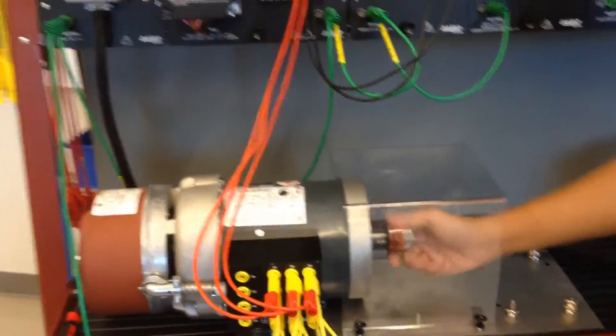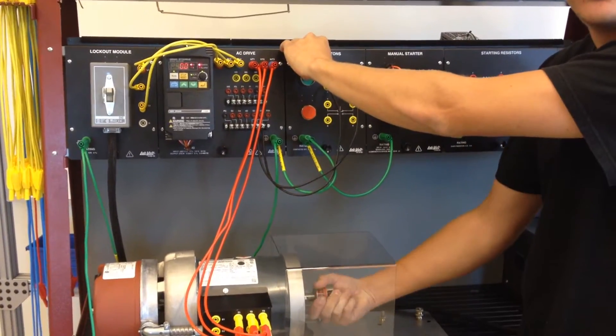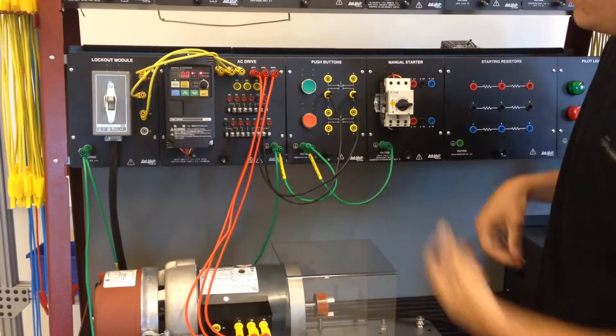So what happens is, right now the motor free spins. When you push the button, it provides DC power to the motor. It gets extremely hard to spin in both directions. We'll show that here.